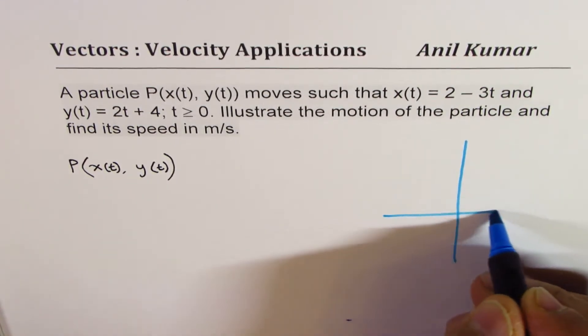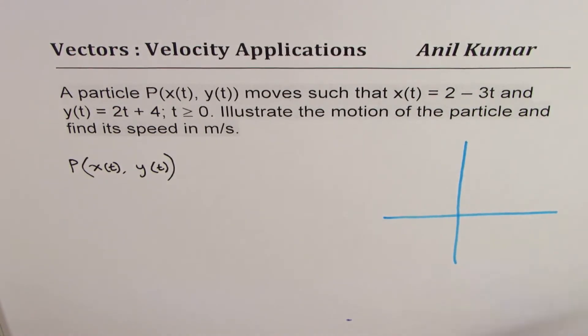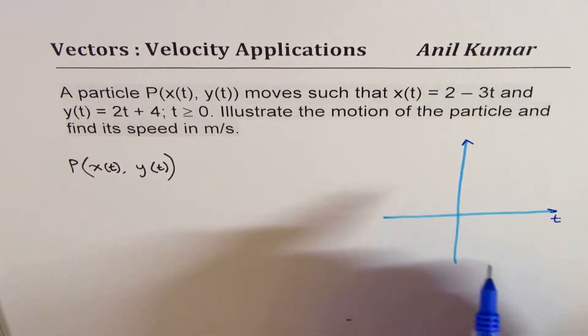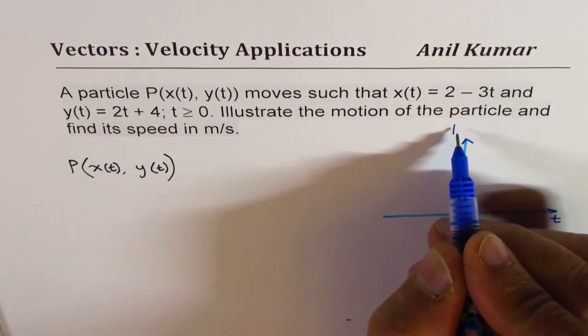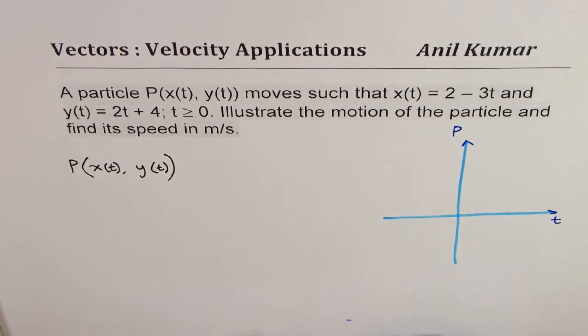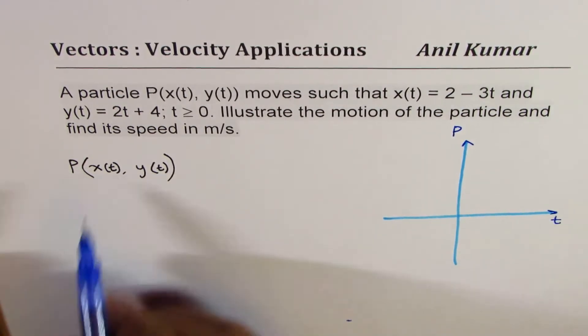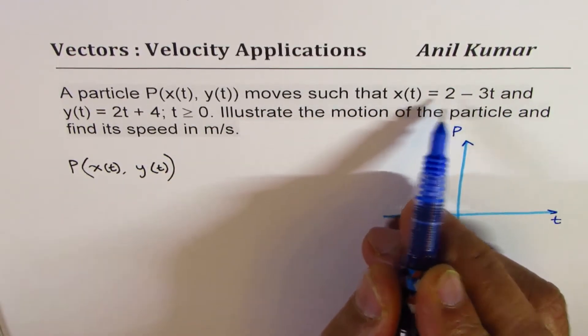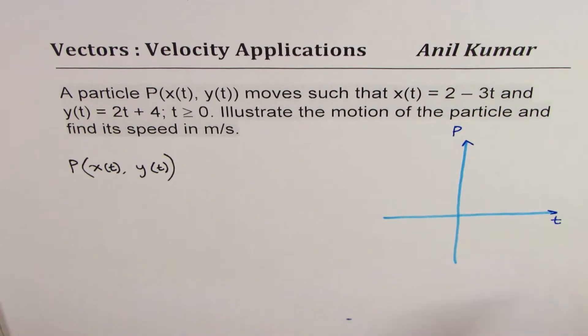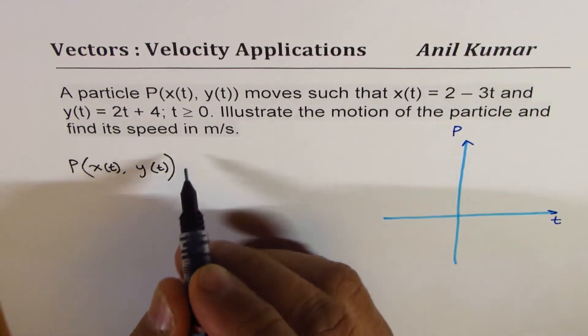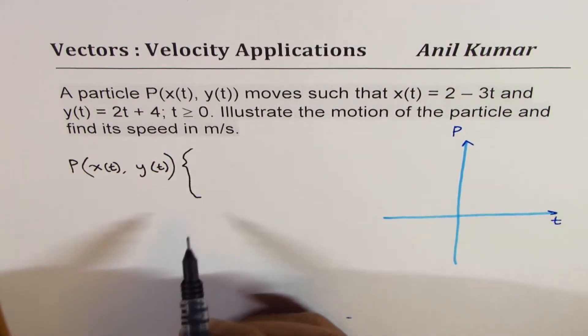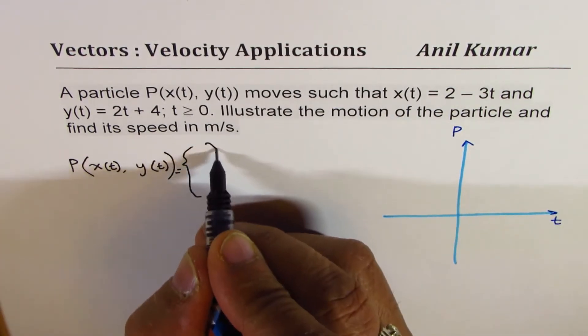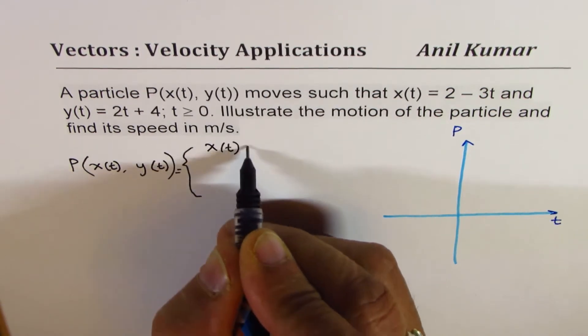Let me just make a diagram here to represent the situation. We can take time along the x-axis and position P on the y-axis. So it says the particle moves such that x(t) is some value and y(t) is some other value, given in terms of parameter t which is time.